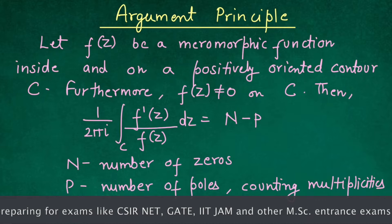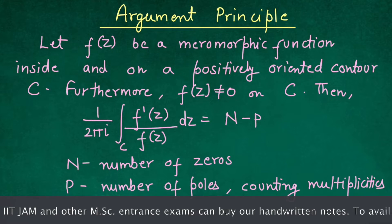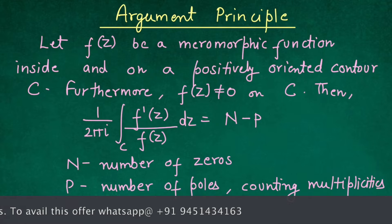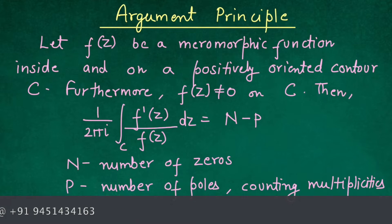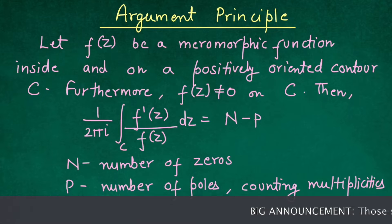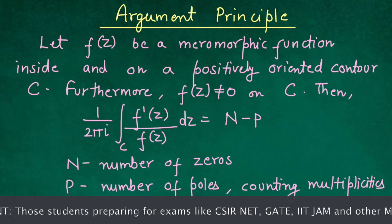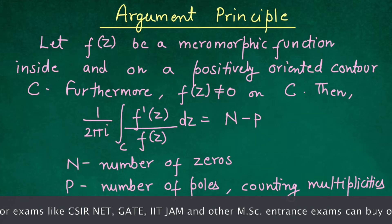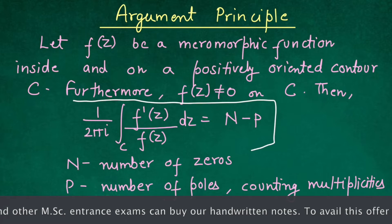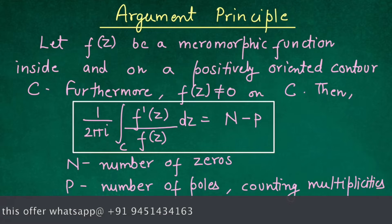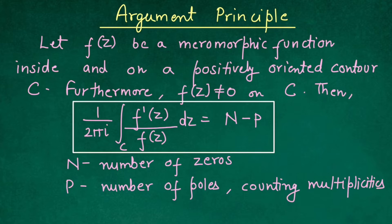The statement of the Argument Principle is: let f(z) be a meromorphic function inside and on a positively oriented contour C. A meromorphic function means f(z) is analytic, or if f(z) has any singularity then that singularity must be a pole. It is also given that f(z) is non-zero on contour C. Then (1/2πi) times the integral of f′(z)/f(z) along C equals N minus P, where N is the total number of zeros and P is the total number of poles, counting multiplicities.